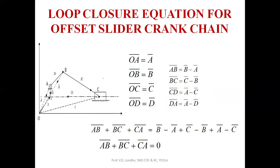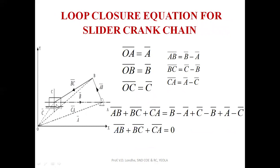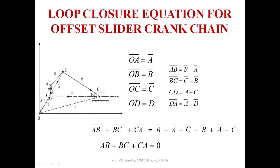For the offset slider crank chain mechanism, unlike the in-line slider crank, the position of the C point and the A point have some eccentricity. This eccentricity must also be considered in the vector form. So here AB bar plus BC bar plus CD bar plus DA bar, and the summation is always equal to zero. This confirms that the sum of relative position vectors for all given links is always equal to zero.